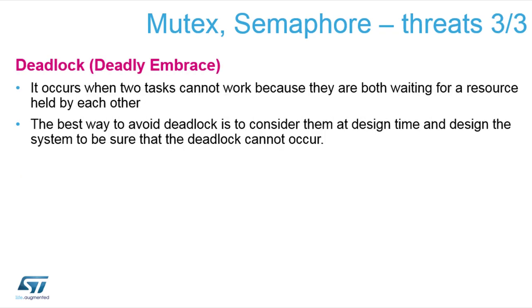Using several different synchronization objects together can lead to a deadlock. It can happen that two tasks each require two different resources. At some point, task one acquires resource one and task two acquires resource two, and they both wait for the other resource. At that moment neither task can acquire the other resource or give up its own, so both tasks are completely locked and cannot continue. When designing your application, you should avoid deadlocks by never waiting for two resources in a crossed way.